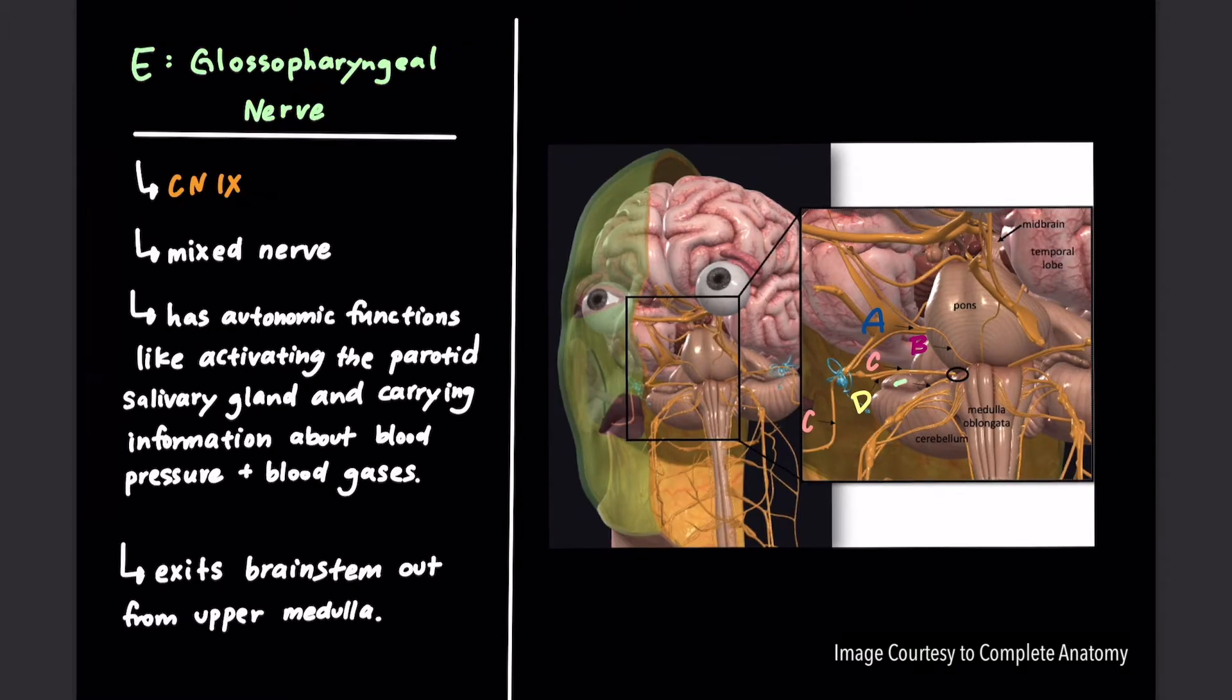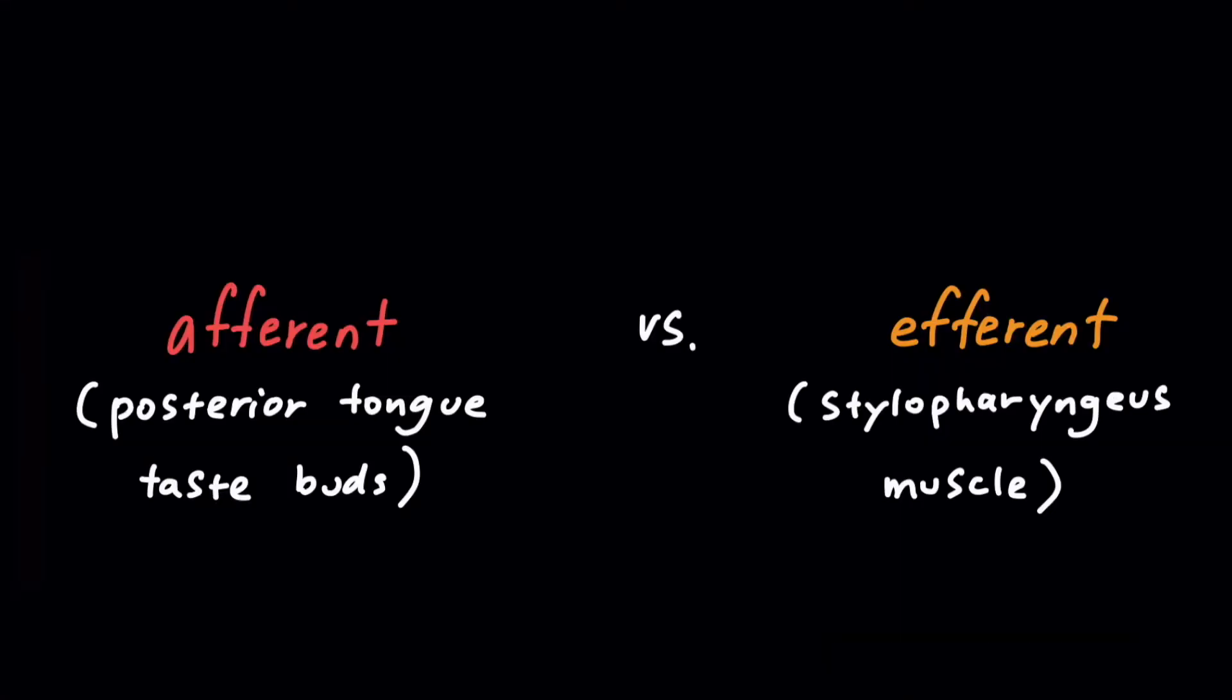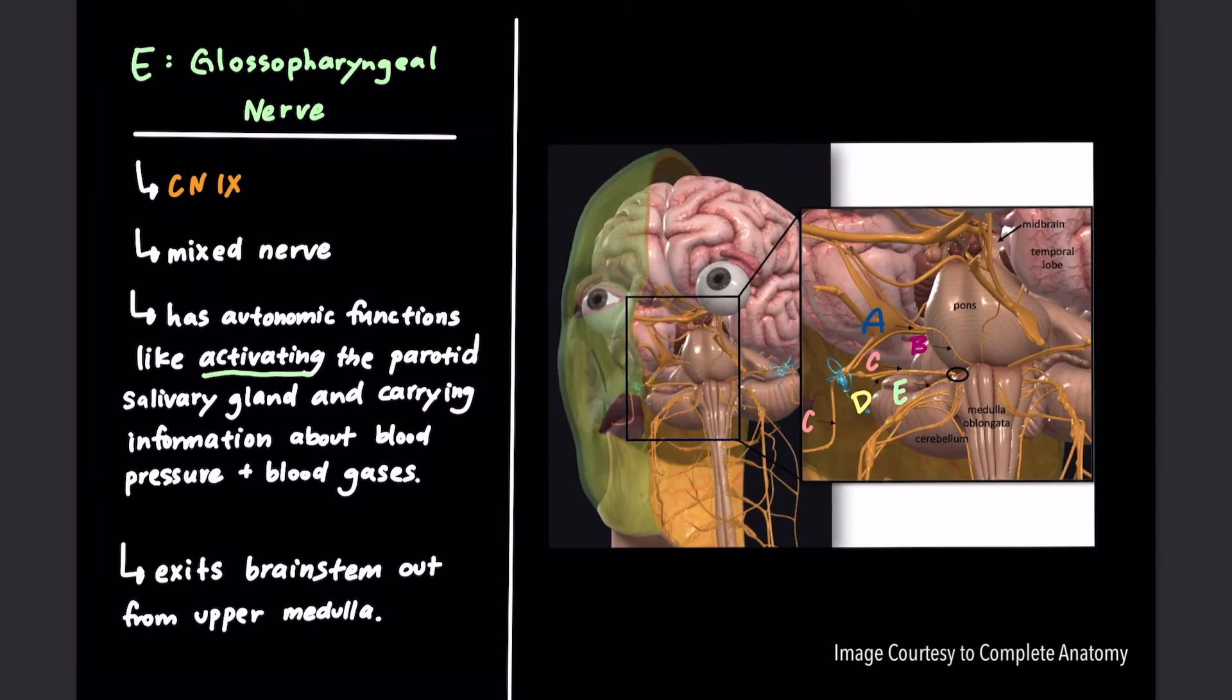Cranial nerve number nine is the glossopharyngeal nerve. It too is a mixed nerve that carries afferent ipsilateral sensory information from, for example, the posterior tongue taste buds and efferent motor control of the stylopharyngeus muscle, which elevates the larynx and pharynx during speaking and swallowing. It also has autonomic functions like activating the parotid salivary gland and carrying information about blood pressure and blood gases from the carotid sinus and body. It exits the brainstem out from the sides of the upper medulla just anterior to the vagus nerve.